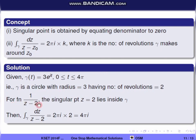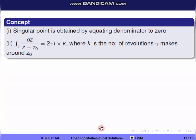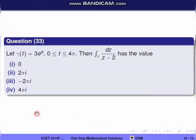For the function 1/(z minus 2), the singular point is obtained by setting the denominator to 0: z minus 2 = 0, so z = 2 is the singular point, and it lies inside the circle of radius 3. So the integral equals 2πi times 2 (the number of revolutions), which equals 4πi. The correct option is 4.